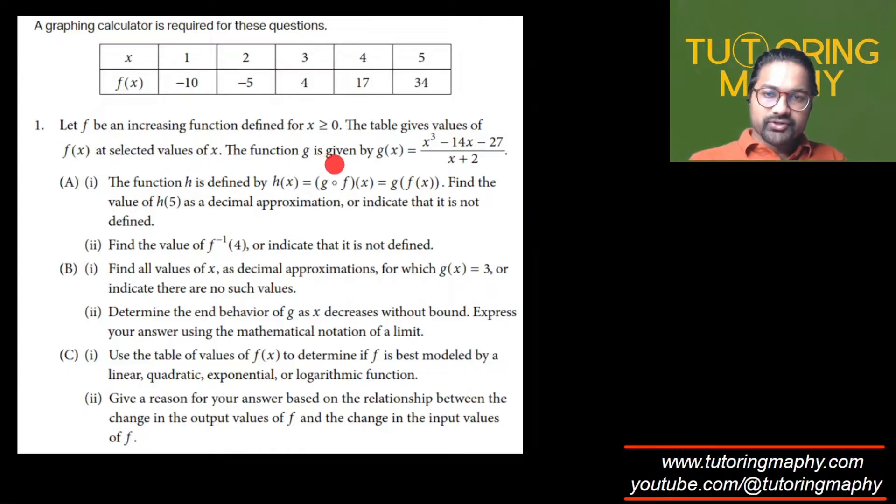The function G is given. Here comes the first question: the function H is defined by a nested composite function, which is G of f(x). Find the value of H(5) as a decimal approximation or indicate that it is not defined.